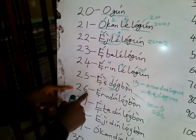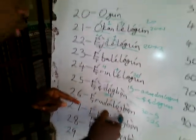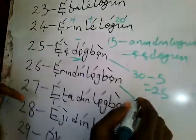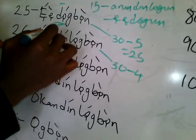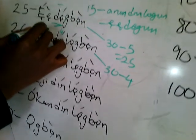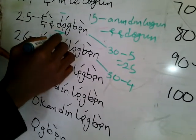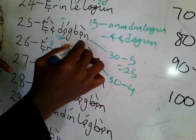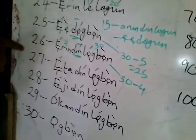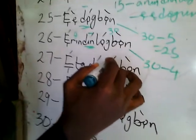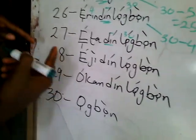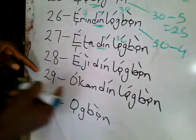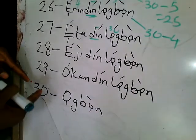Moving on to 26: Erin D Logun, that is 30 minus 4. The 'D' here is negative and Erin is 4, with Ogun being 30, so 30 minus 4 gives us 26. For 27, which is 30 minus 3, D is minus to give us 27. Then 28 is Eji De Logun, 29 is Okan De Logun, and 30 is Ogbon.